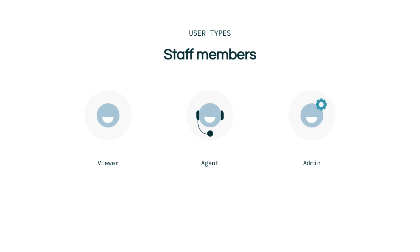Viewers are staff members who can only view your content. Agents go into the community to guide the discussion by making sure that end user questions get answers. They also write articles and manage customer tickets. Admins organize the structure of your Help Center. Admins are the ones organizing posts and articles, moderating community conversations, and branding your Help Center theme.